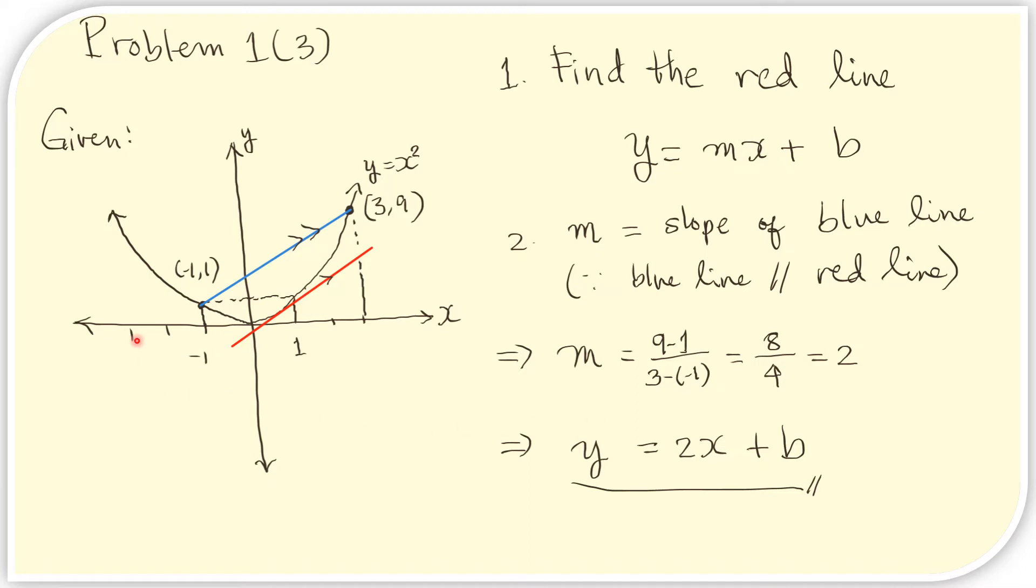Let us first draw the given. We are given a parabola, so this is the parabola, and we are told that its equation is y equals x squared, and therefore its vertex would be here at (0, 0). We are also told that there are two points on the parabola that are known, (-1, 1) and (3, 9). And finally,